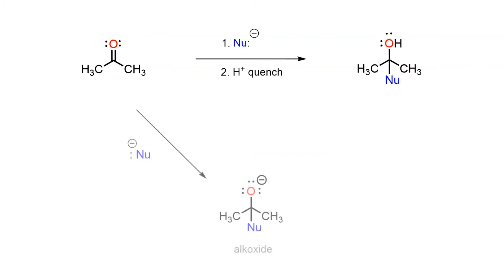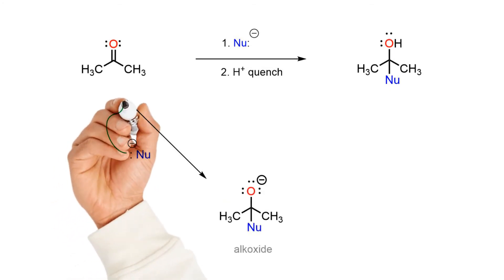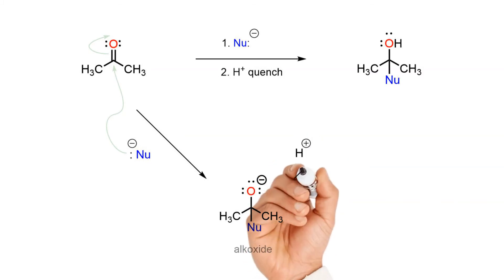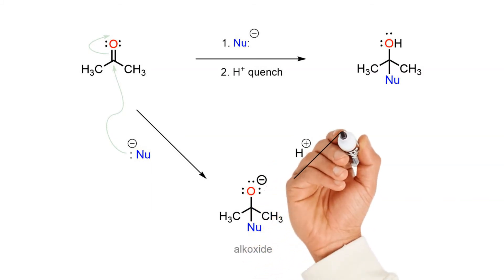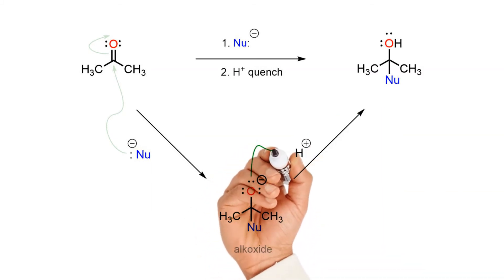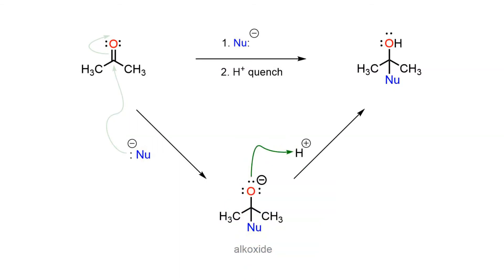The first step in the mechanism is a nucleophilic attack of the nucleophile on the flat sp2 hybridized carbonyl carbon. As the new sigma bond is formed, the electrophilic carbon rehybridizes to sp3, becoming tetrahedral, and the negative charge develops on an oxygen to give an alkoxide. Once the addition is complete, an acid is added to neutralize the reaction mixture and the alcohol is delivered through a rapid proton transfer step.